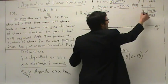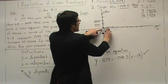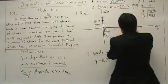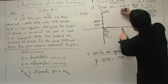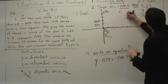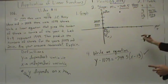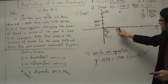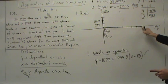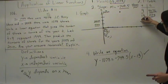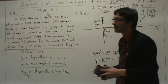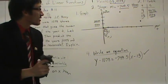We have to graph the point (9, 4076): going along the T axis to 9, up to 4,076 — that's slightly above 4,000. We also have to graph the point (13, 1078): going along the T axis to 13, up to 1,078.